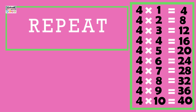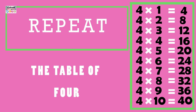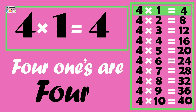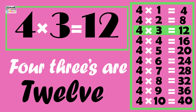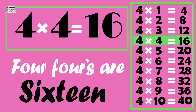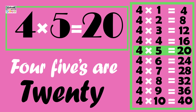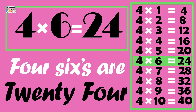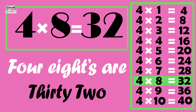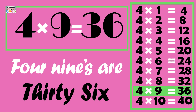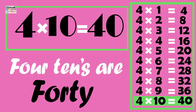Let's repeat the table — the table of 4. 4 ones are 4, 4 twos are 8, 4 threes are 12, 4 fours are 16, 4 fives are 20, 4 sixes are 24, 4 sevens are 28, 4 eights are 32, 4 nines are 36, 4 tens are 40.